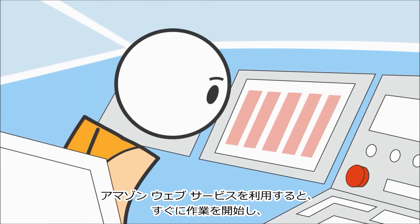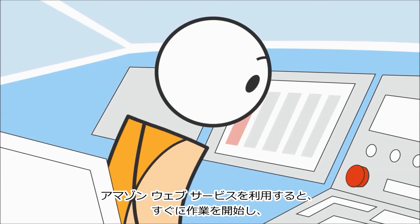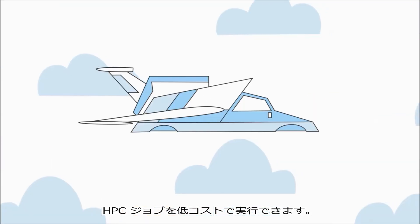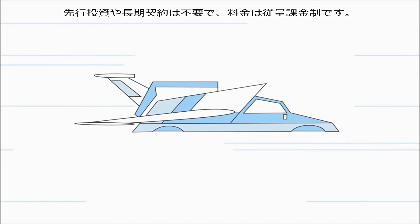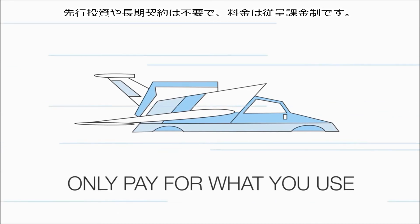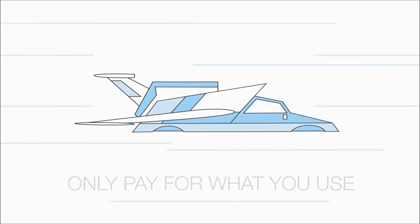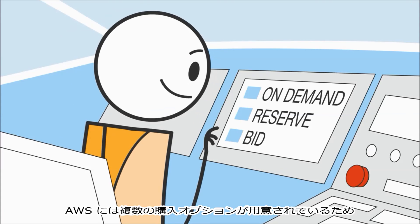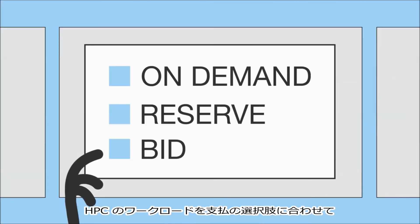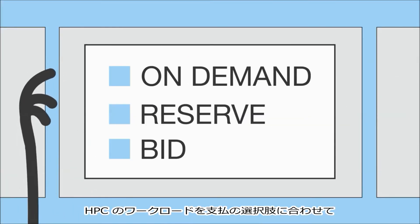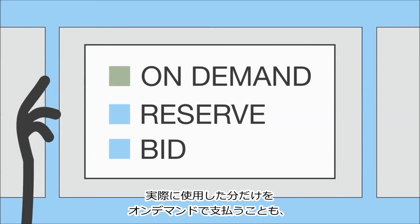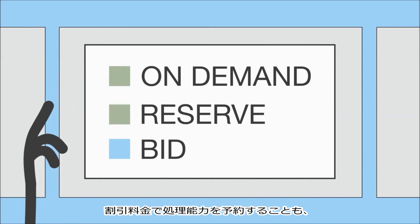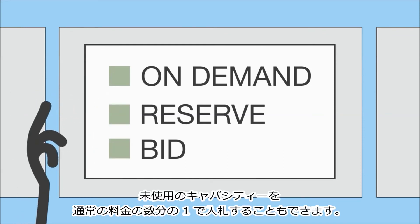Amazon Web Services allows you to get started running HPC jobs at low cost without any upfront capital expense or long-term commitments, and you only pay for what you use. AWS has several purchasing options, so you can match your HPC workload to your payment choices and optimize costs. You can pay for what you use on demand, reserve discounted capacity, and even bid on unused capacity at a fraction of the normal rate.